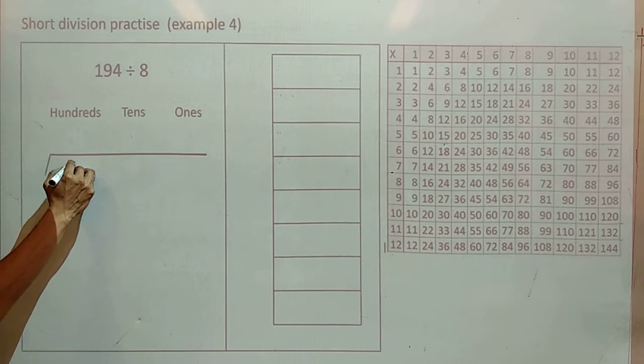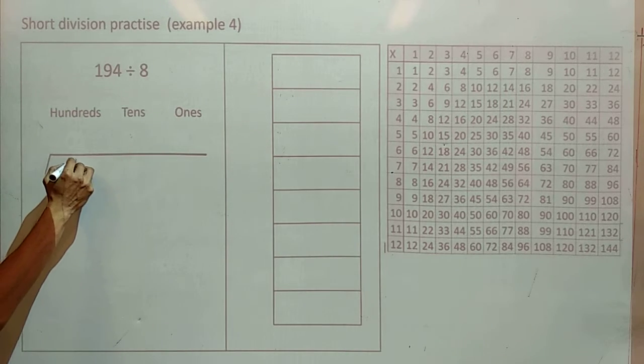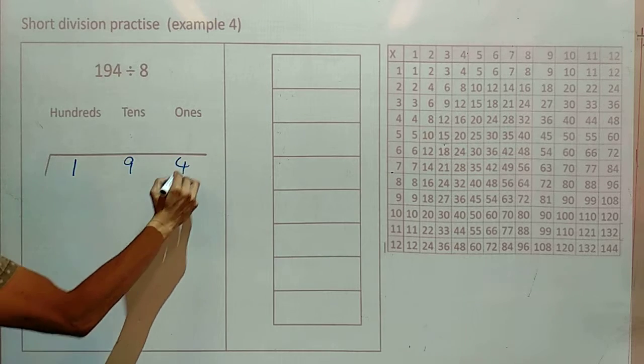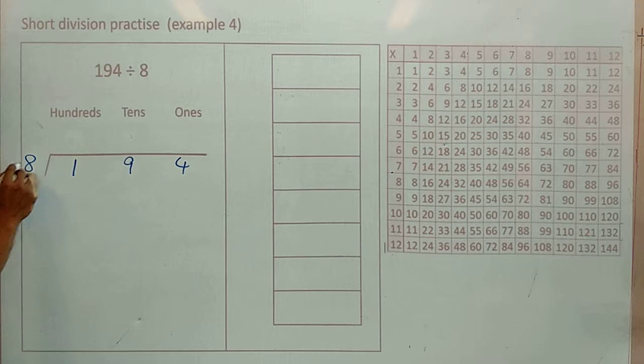We have 1 group of 100, we have 9 groups of 10, and 4 groups of 1. And we're going to divide these by 8.